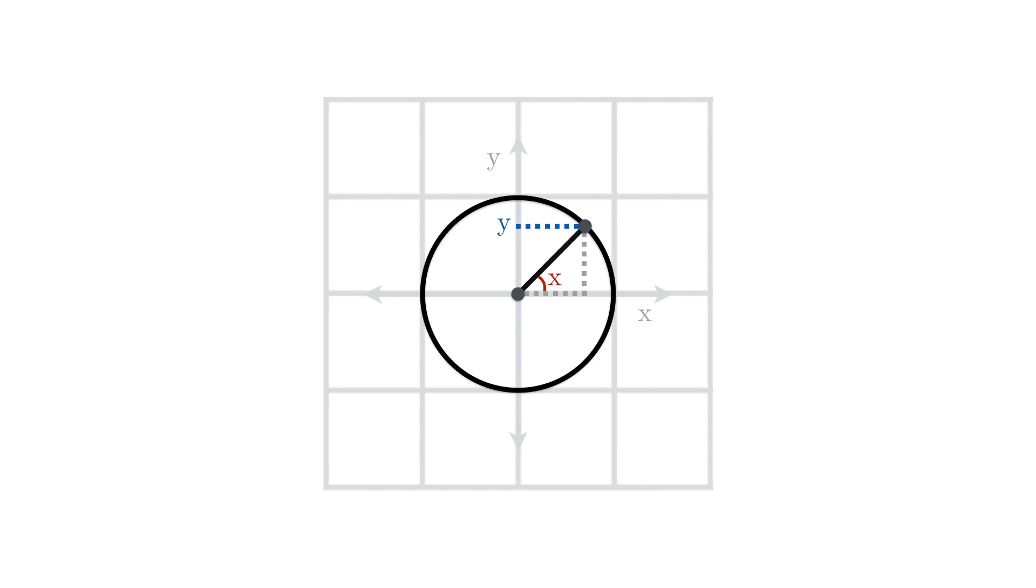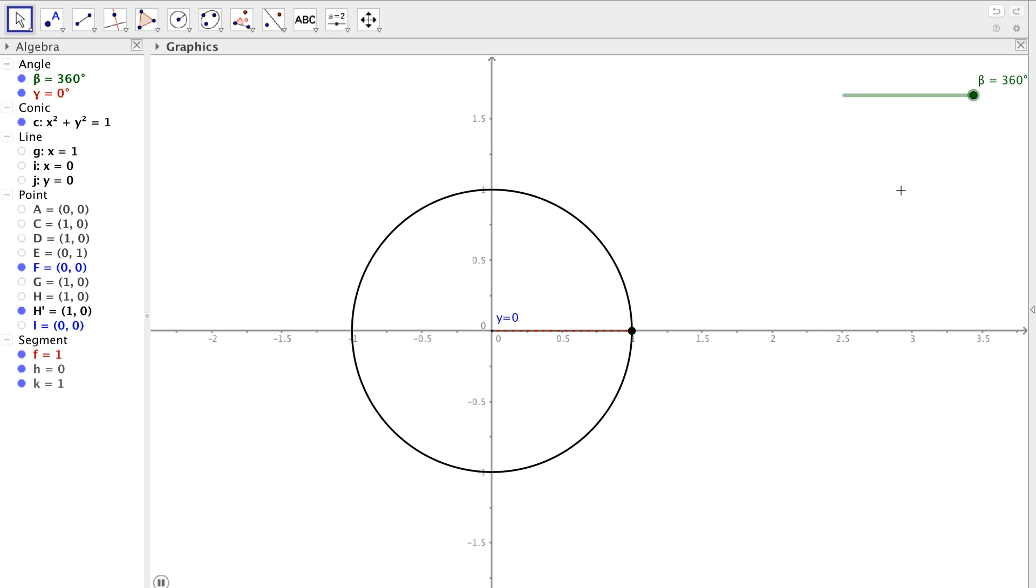So if we begin at an x value of 0, meaning that the angle will be 0 degrees, and then start to increase that number, we see that the height of the triangle slowly moves towards 1, then back to 0, and as our angle goes above 180 degrees, the y value becomes minus 1, and then completes the loop by going back to 0.